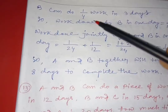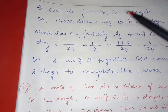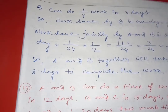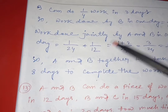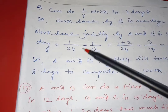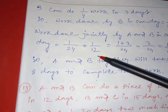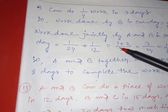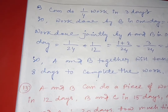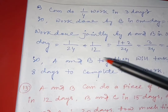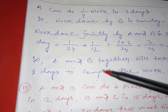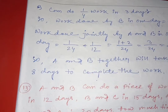B can do 1 by 4 work in 3 days, so work done by B in one day equals 1 by 4 divided by 3, which equals 1 by 12. Work done jointly by A and B in one day equals 1 by 24 plus 1 by 12, which equals 1 plus 2 by 24, which equals 3 by 24, which equals 1 by 8. So A and B together will take 8 days to complete the work.